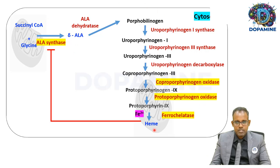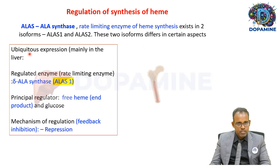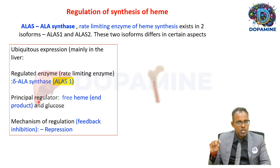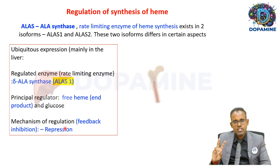ALA synthase exists in two isoforms: ALA synthase 1 and ALA synthase 2. ALA synthase 1 is found predominantly in the liver. It is constitutively expressed and is regulated by free heme — when there is a lot of heme it inhibits ALA synthase 1. Through an unknown mechanism, glucose can also inhibit ALA synthase 1 via feedback inhibition and repression.